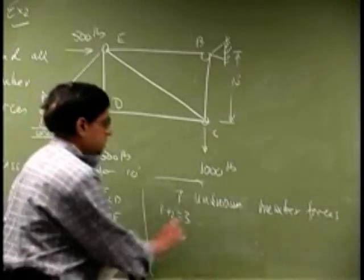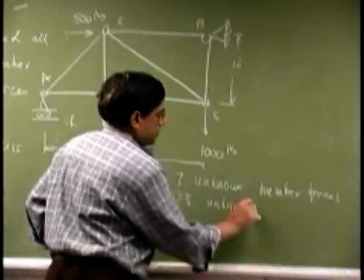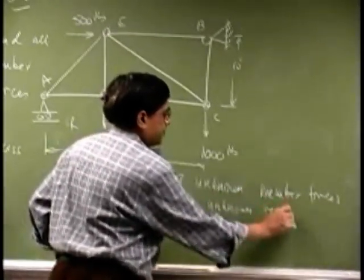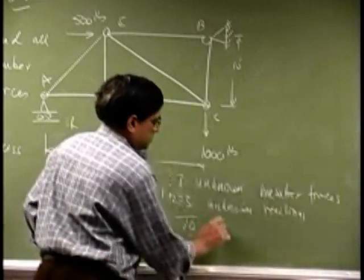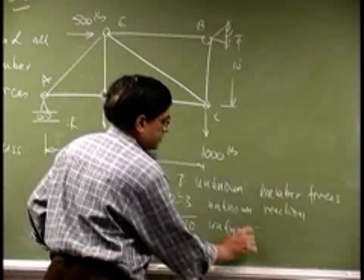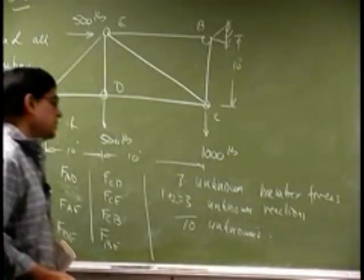So these are three unknown reactions. It all adds up to ten unknowns. Then you have ten unknowns.